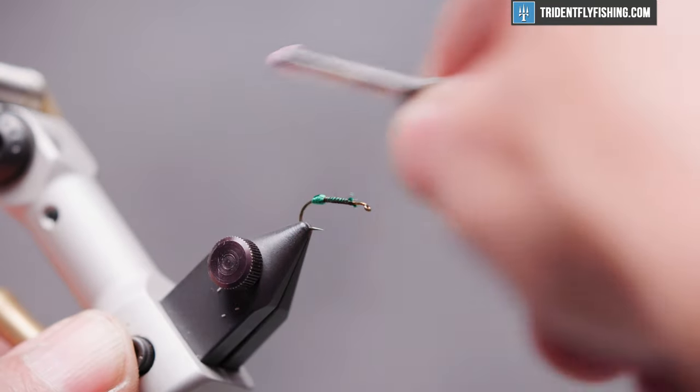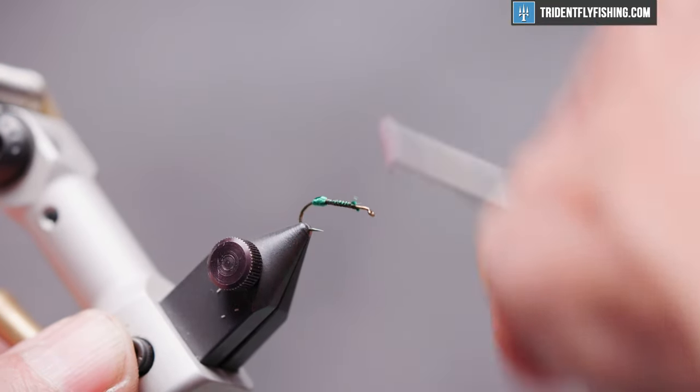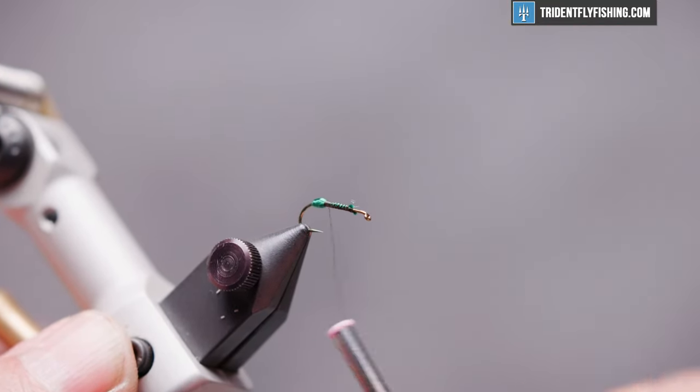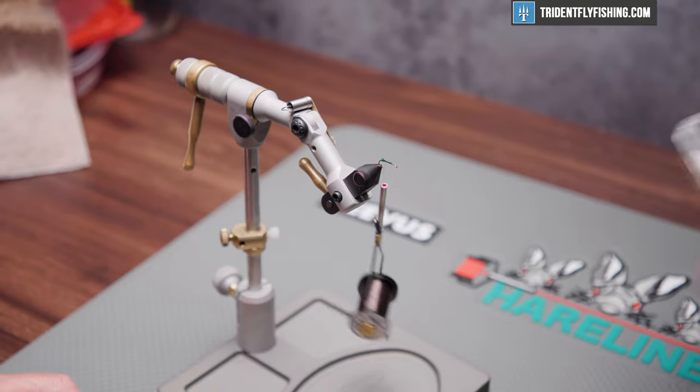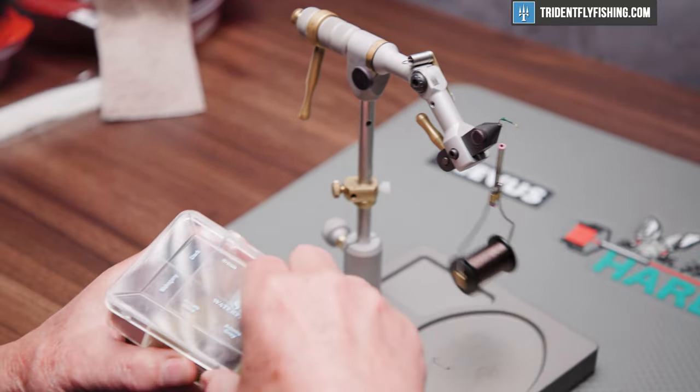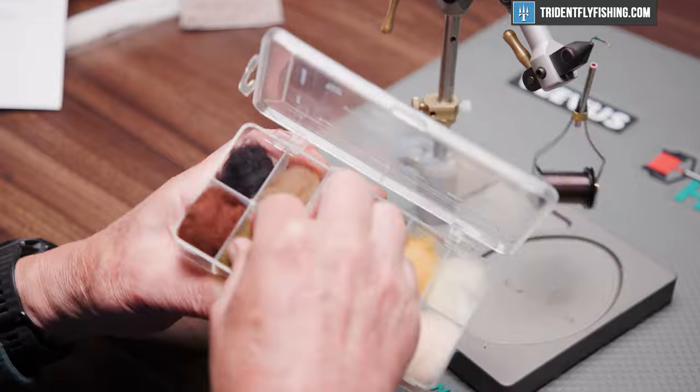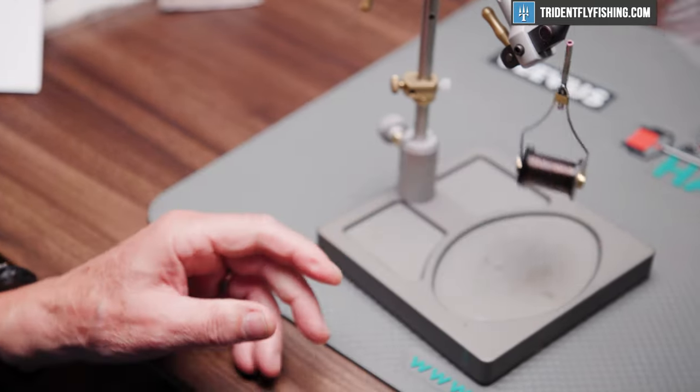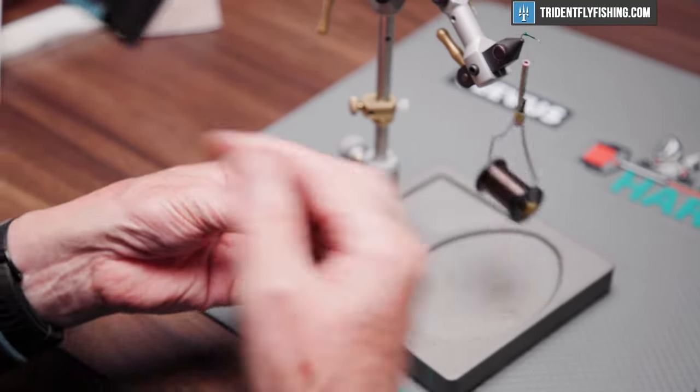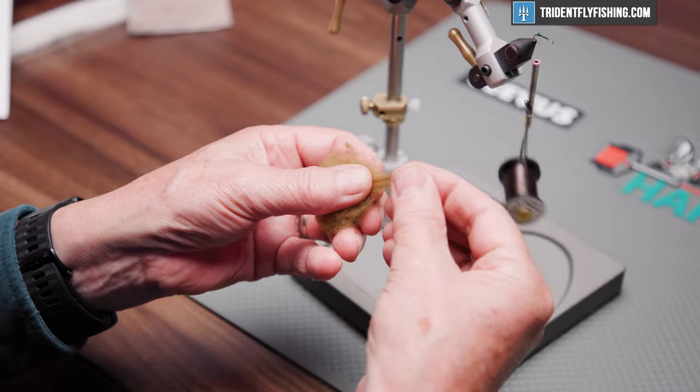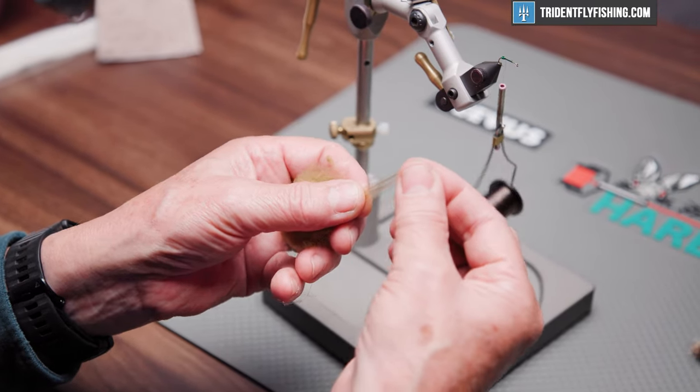Cut off our excess floss. Run our thread back to the start of the egg sac where we're going to tie in our body. And that is some super fine dubbing. And the color is brown olive. Create a nice thin noodle here on our thread.